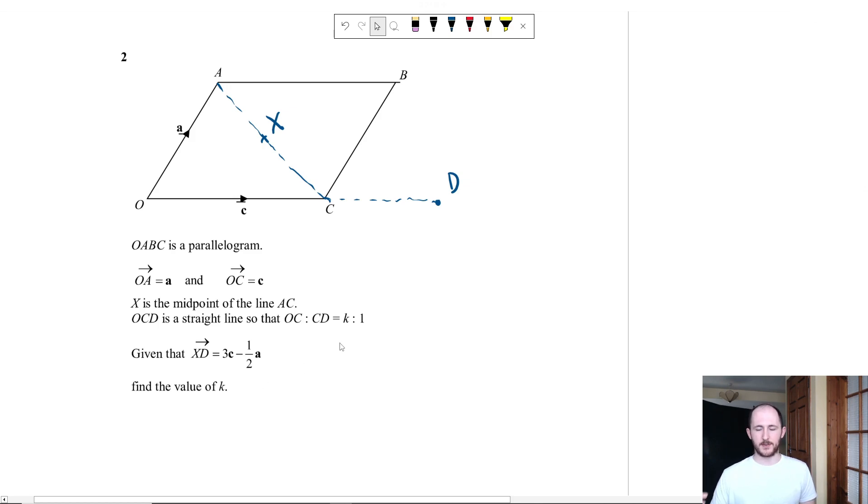So where would you start? Well, that's a really good question. So the first thing I would do is kind of look at what I have and what I need. So whenever you have this kind of ratio question, we're looking for K, right? So something that's really useful is we want to work out what OC is and CD. Once we know those two things, we can work out how much bigger one is than the other.